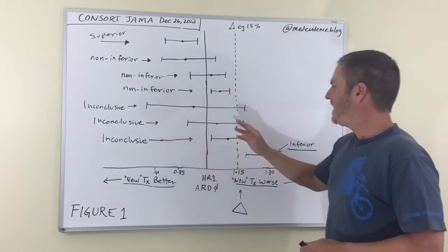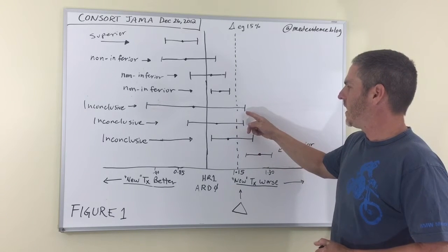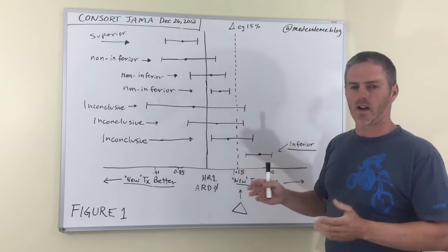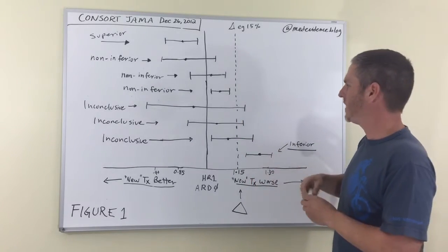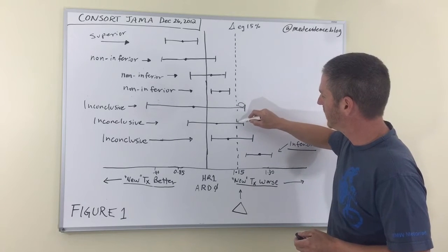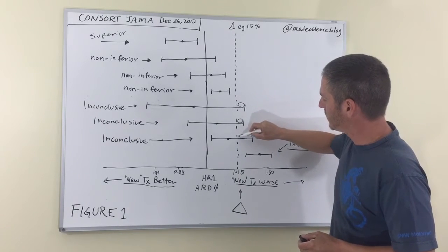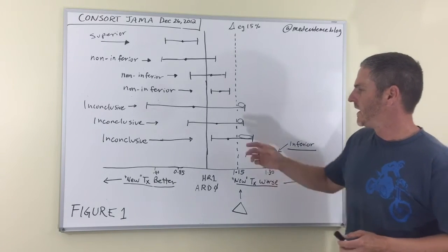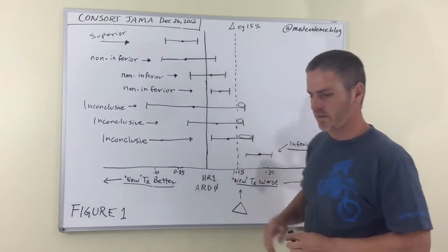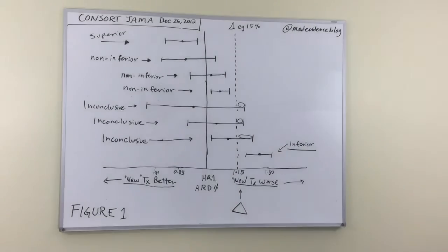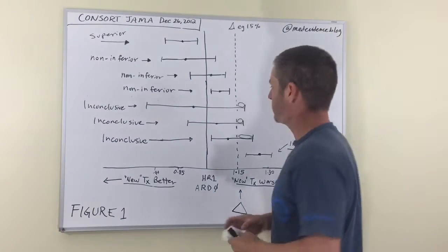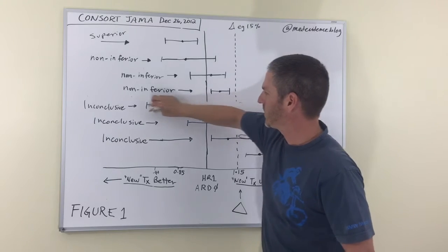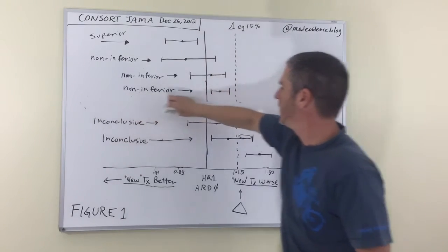They say that any time that your 95% confidence interval extends past delta, it's inconclusive because the 95% confidence interval includes the possibility that the true difference includes these values here, which are greater than the pre-specified margin of non-inferiority or delta here. And in the case of this one, for example, which I will erase to simplify things, it just means that your sample was way too small and you didn't have enough statistical precision.